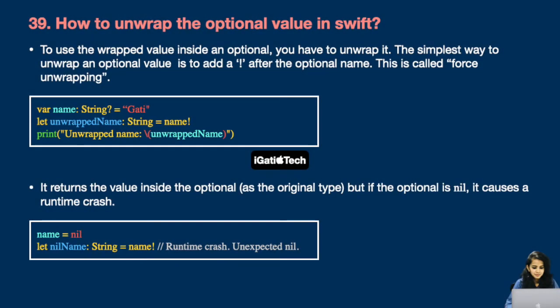Next question: how to unwrap an optional value in Swift — this is probably the most important question. To use the wrapped value inside an optional, you have to unwrap it. The simplest way to unwrap an optional is to add an exclamation mark after the optional name. This is called force unwrapping. In the first example, I have used an exclamation mark to unwrap the optional value 'name'.